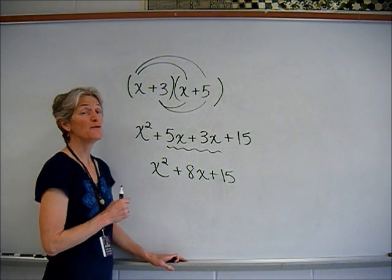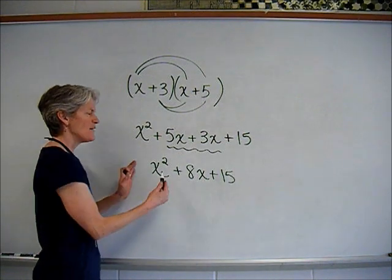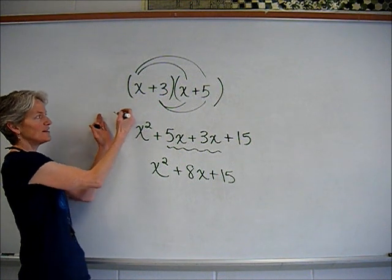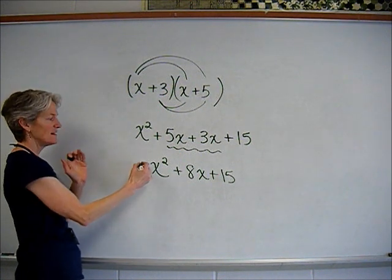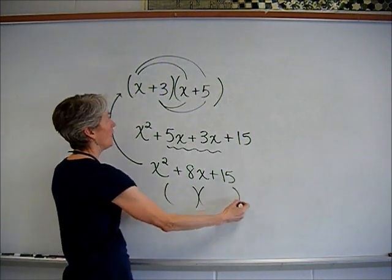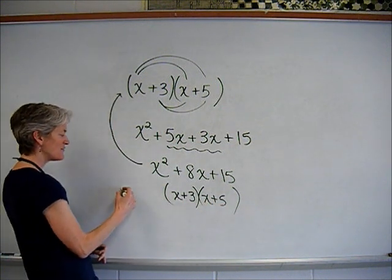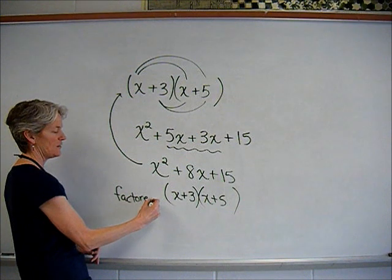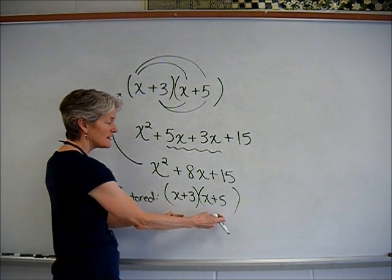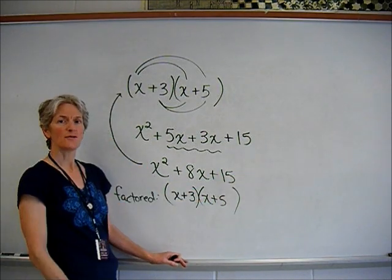So what we've been doing recently is we've been factoring things. We've been breaking things down into their factors. So if I want to factor this, I basically will just want to do this process backwards, don't I? If I want to factor this, I'm looking for... It's just the opposite of multiplying, really. Yeah. I'm looking for that. So this is the factored form right here.